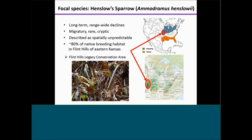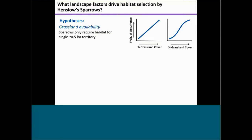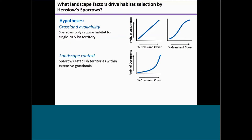About 80% of their remaining breeding habitat is in the Flint Hills of eastern Kansas, but there's not much work done in this region. The Flint Hills Legacy Conservation Area was established in 2010 by the Fish and Wildlife Service to protect more than 1 million acres of the 6 million acre region, with one of their top priorities being to protect habitat for Henslow's sparrows. I'm asking what landscape factors drive habitat selection, with three hypotheses: the grassland availability hypothesis predicts that probability of occurrence increases proportional to percent grassland cover greater than half a hectare.